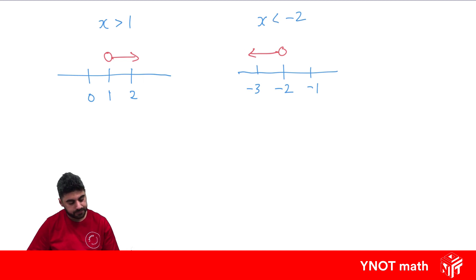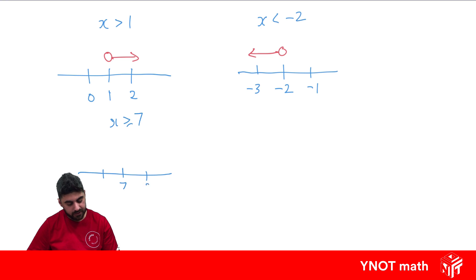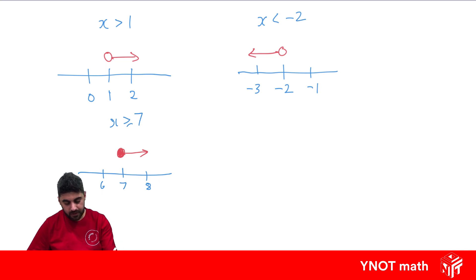What about x is greater than or equal to seven? The key value goes in the middle, with values on either side — so eight and six. This time we have an equal to symbol, so our circle is going to be colored in. All values greater than seven go this way.